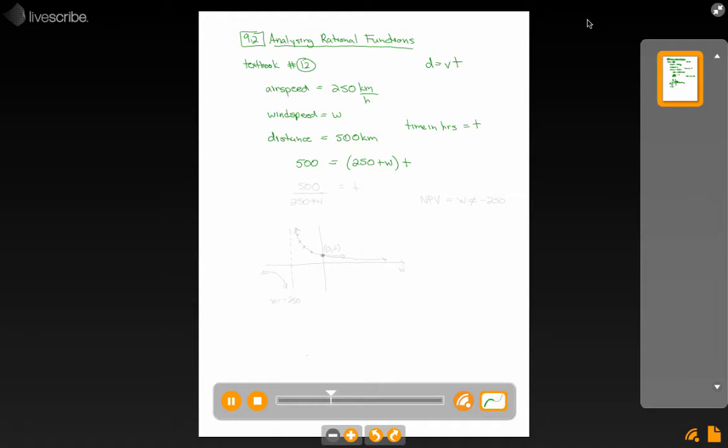Especially if you've done a little bit of physics, even the science 10 version of physics. In the question, they ask us to solve that for T. They say, write T as a function of W, something to that effect. And so we could just divide by this 250 plus W term.